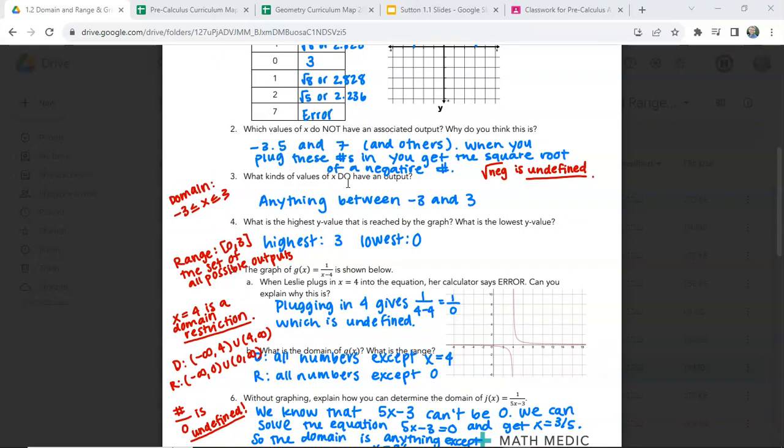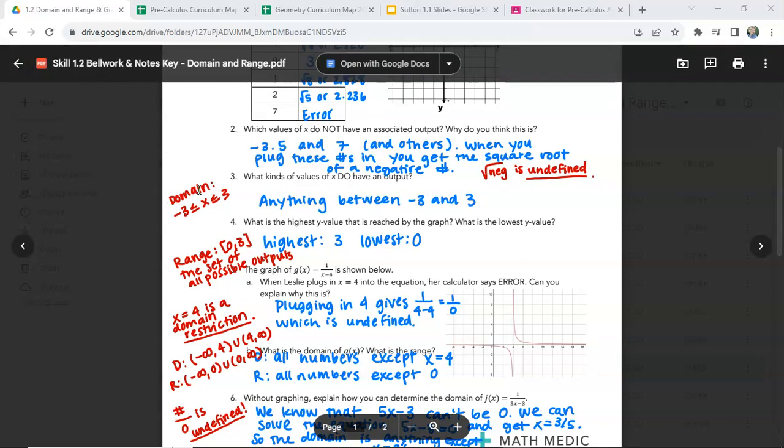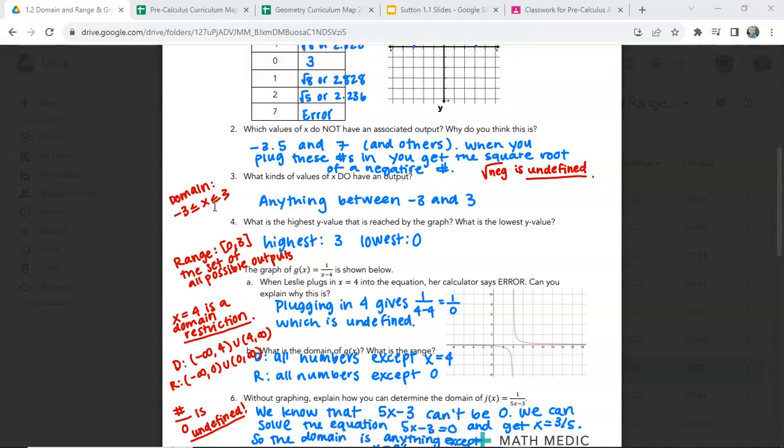What kinds of values of x do have an output? Anything between negative 3 and 3. So that tells us that our domain is between negative 3 and 3, including negative 3 and 3.